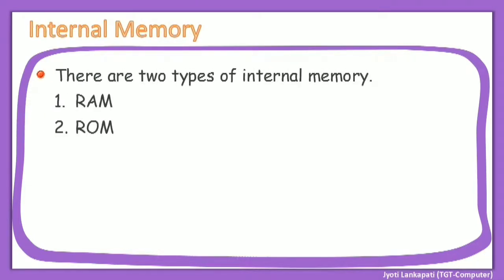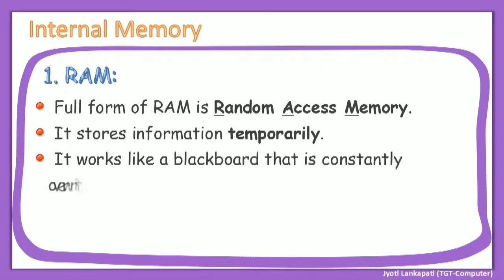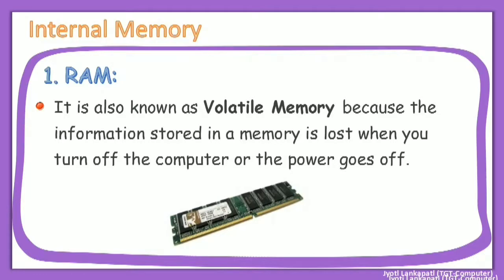There are two types of internal memory: RAM and ROM. The full form of RAM is Random Access Memory — R for Random, A for Access, M for Memory. RAM stores information temporarily; it works like a blackboard that is constantly overwritten with new data. RAM is a temporary, volatile memory because the information stored is lost when you turn off the computer or when the power goes off.